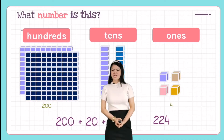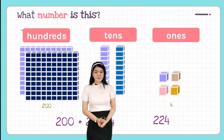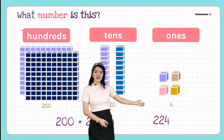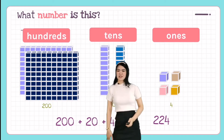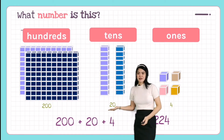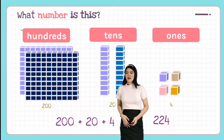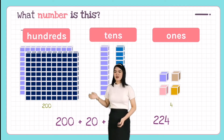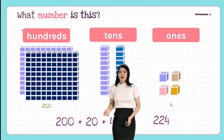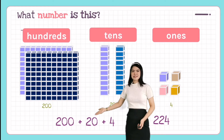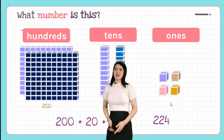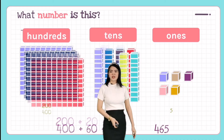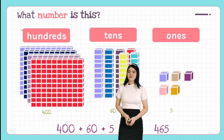Let's have another example. How many ones do we have? One, two, three, four — so four is in the ones place. How about the tens place? We have two tens. How about in the hundreds place? We have two hundreds, or 200. We write it 200 + 20 + 4 in expanded form, and in standard form we write it 224.